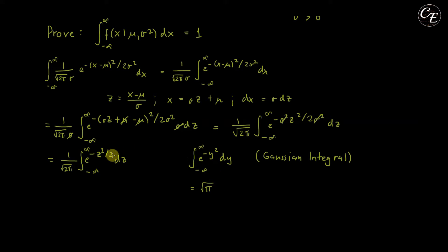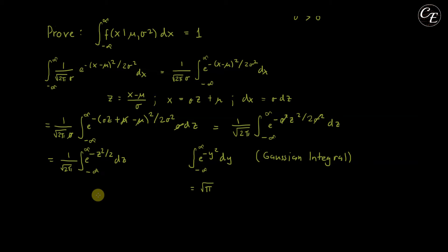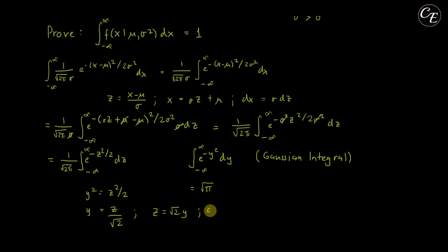Now, if you compare our integral and the Gaussian integral, they are not exactly the same because here we have z squared over 2, and the Gaussian form does not have the over 2. So we need another transformation to make our integral match the Gaussian form. We want y squared to equal z squared over 2. Our transformation function is y equals z over square root of 2. Then z becomes square root of 2 times y, and dz equals square root of 2 dy.